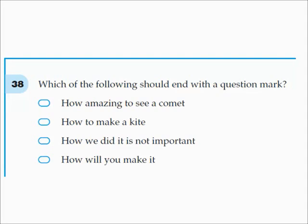Whereas 'How amazing to see a comet'—your voice just stays steady. Although sometimes we show excitement by going up at the end too. But you need to look at each one and think, what's the answer to it? 'How amazing to see a comet' doesn't really require an answer. 'How to make a kite' doesn't require an answer. 'How we did it is not important.' And 'How will you make it?' Oh, well, I'll make it by... So that one does require an answer. When they're asking you about punctuation marks, think: what would be the next part of speech? What does this actually connect to?